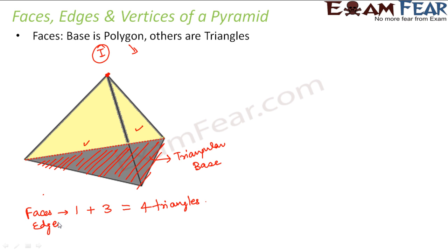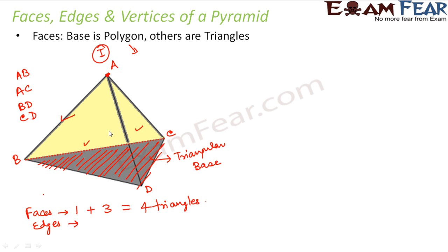Now what about edges? There will be an edge between every two faces. Let us name the vertices A, B, C, D. AB is an edge connecting the yellow surface with the dark green surface. AC is also an edge. BD is an edge connecting the base triangle with triangle ABD. CD is also an edge, and AD and BC are edges as well. So in total you have six edges.